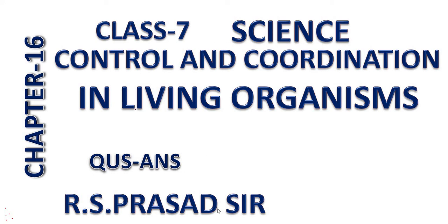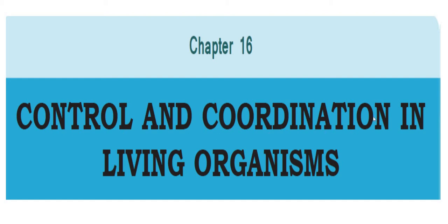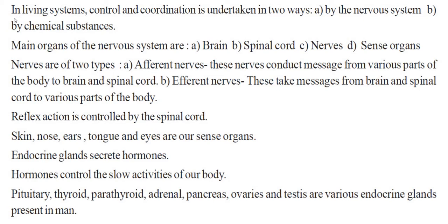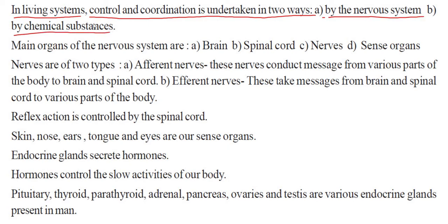Class 7 Science. I am R.S. Prasad Sir. Today your chapter 16, that is Control and Coordination in Living Organisms, question and answer. In living systems, control and coordination is undertaken in two ways: first by the nervous system, and second by chemical substances.